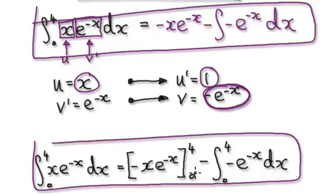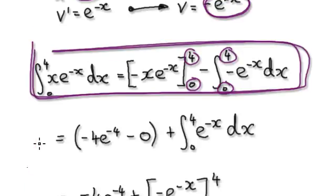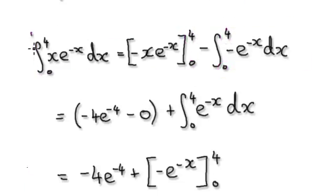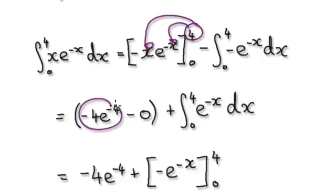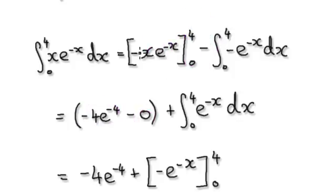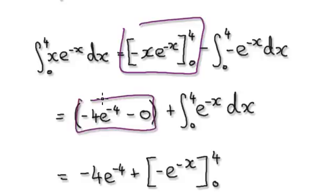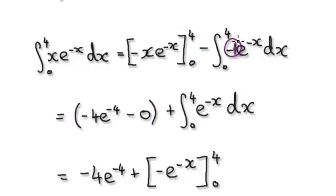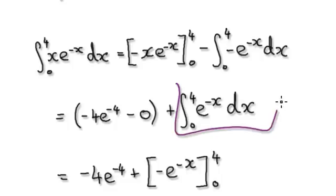Remember we are integrating from 0 to 4. We are currently at this stage. Evaluating means substituting 4 in, then substituting 0 in and subtracting. This gives us this value here. The minus 1 here is a constant, so take it out — that gives a plus sign.